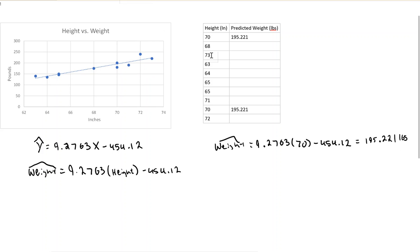So my predicted weight for a person who is 70 inches tall based on my data is 195.221 pounds. And then I can enter that into my table. And you notice I put it in two places because I had two different individuals who were 70 inches tall here. So I'm predicting both of them would be about that same weight.